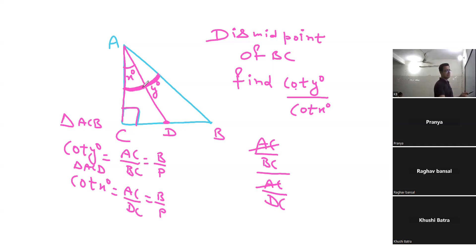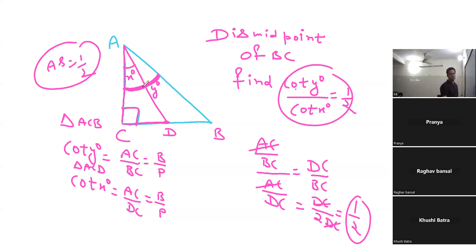AC cancels out, leaving BC over DC. Now, D is the midpoint of BC, so BC equals twice DC. Therefore BC over DC equals 2, and that's our answer. The important thing is this question is easy but sometimes confusing.